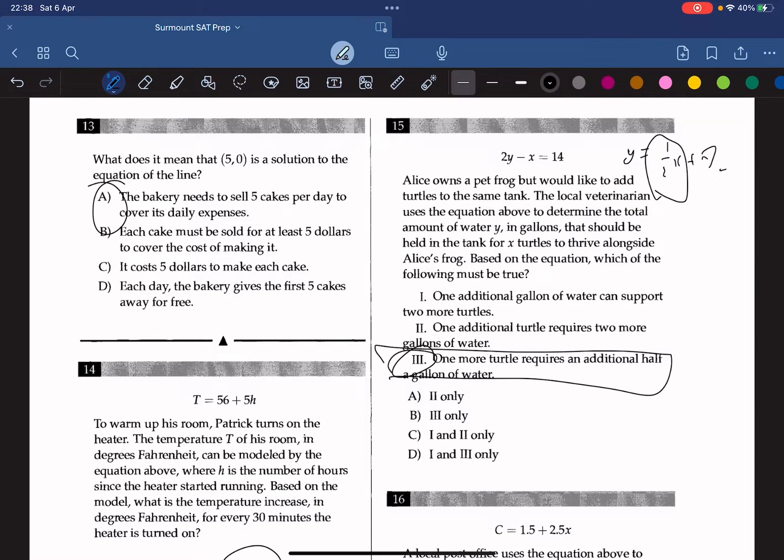We know here that the slope means one more turtle will require half a gallon of water, so the claim of 3 is correct. And getting x in terms of y, we get x equals 2y minus 14. And we know here that the slope of 2 means that one more gallon of water can support two more turtles. So number one is true as well. So one and three are true. So the answer is D.